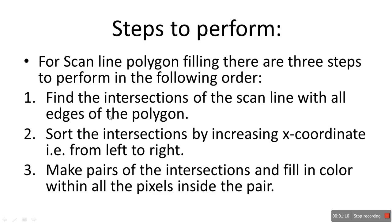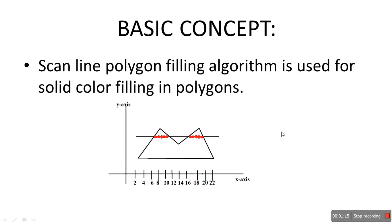The second step: sort the intersections by increasing x coordinate, that is from left to right. So we sort on the basis of the x coordinate: 6, 10, 16, and 20 — sorted in increasing order.